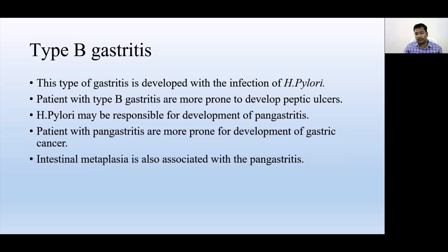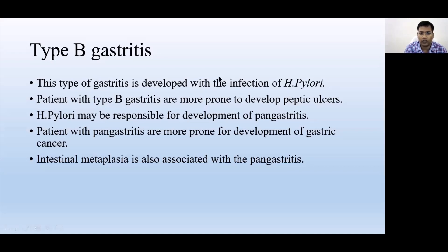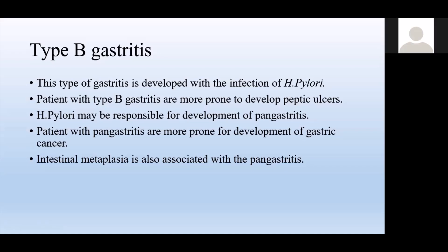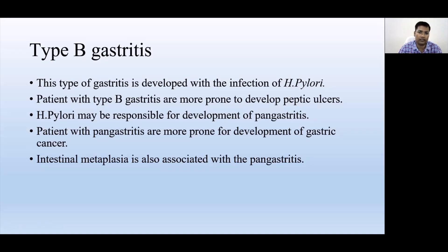The pathology develops as follows: the Helicobacter organism has the ability to hydrolyze urea present in the body. Through hydrolysis of urea, ammonia is produced. Ammonia has a very high alkaline nature, which disturbs the acidic environment of the stomach, making it alkaline.